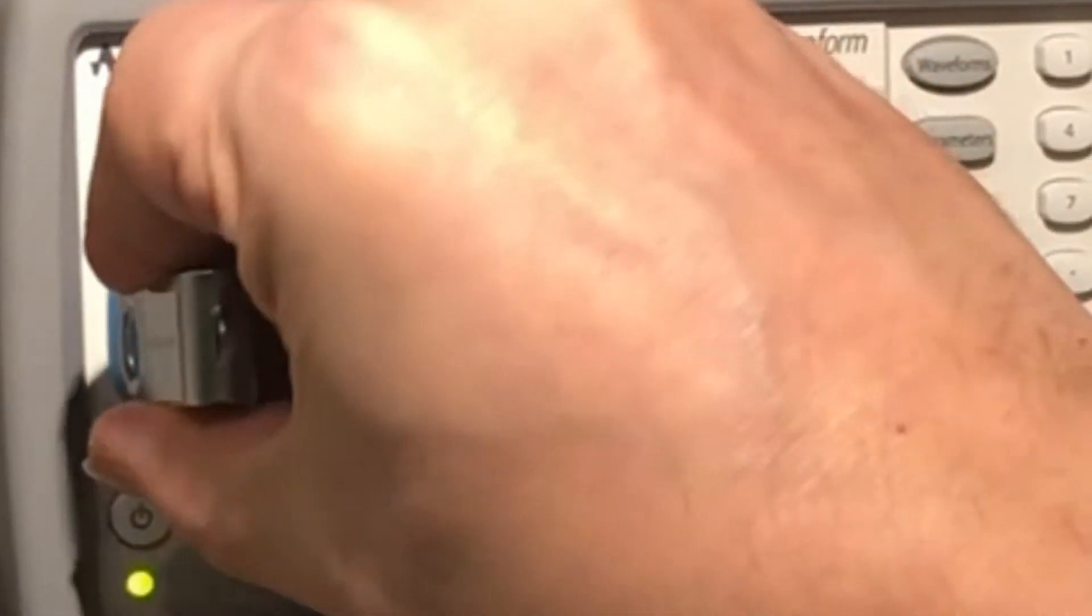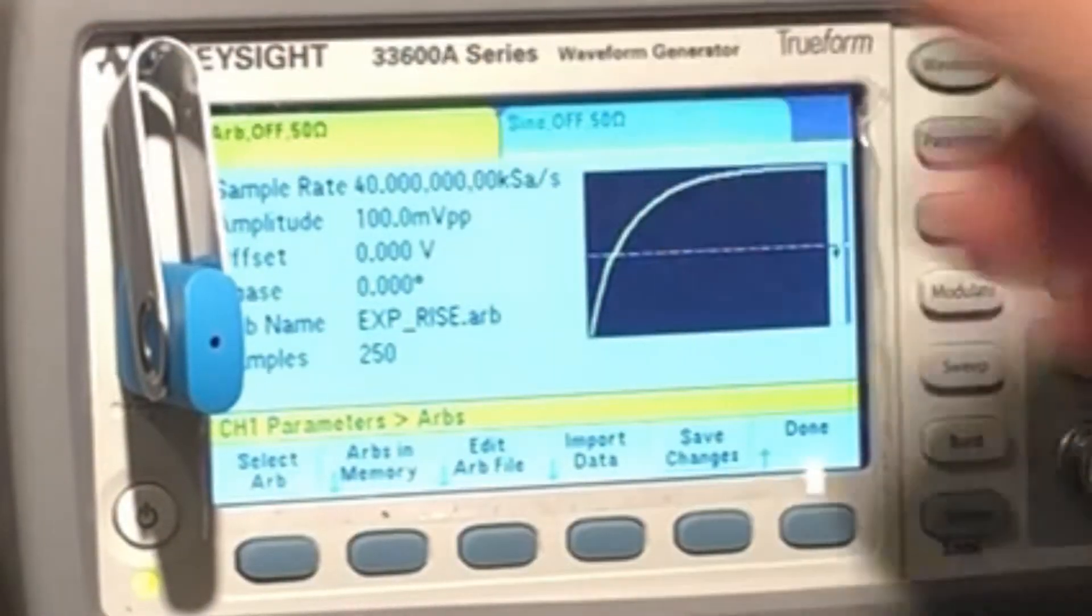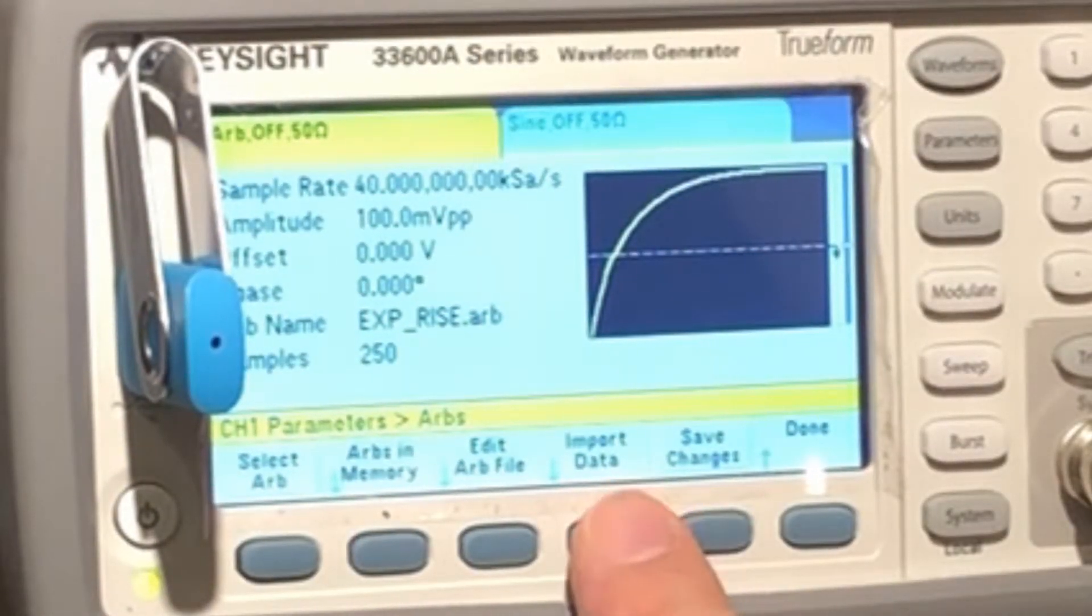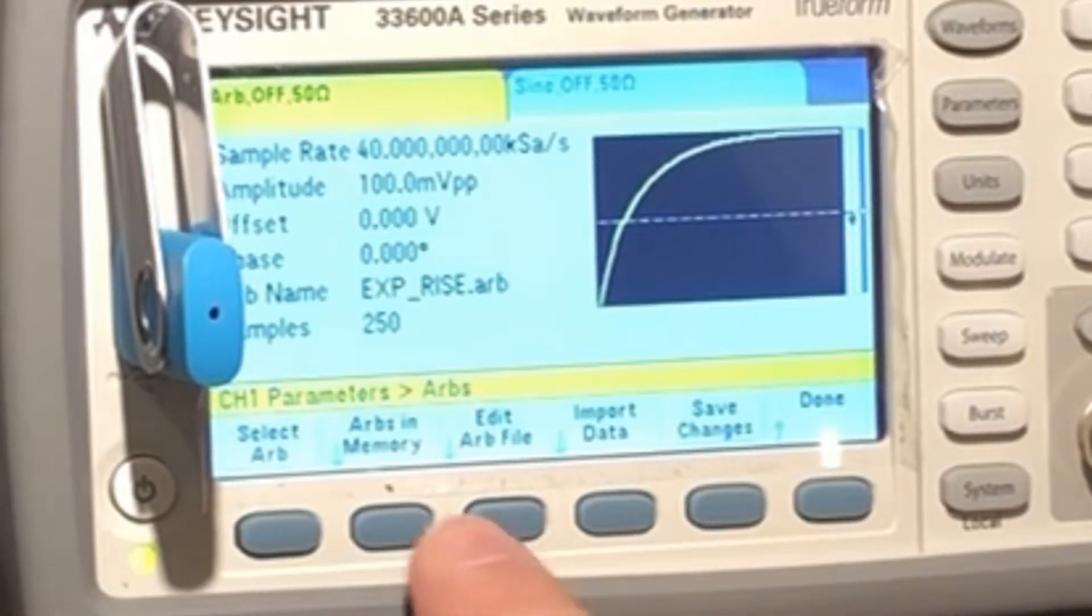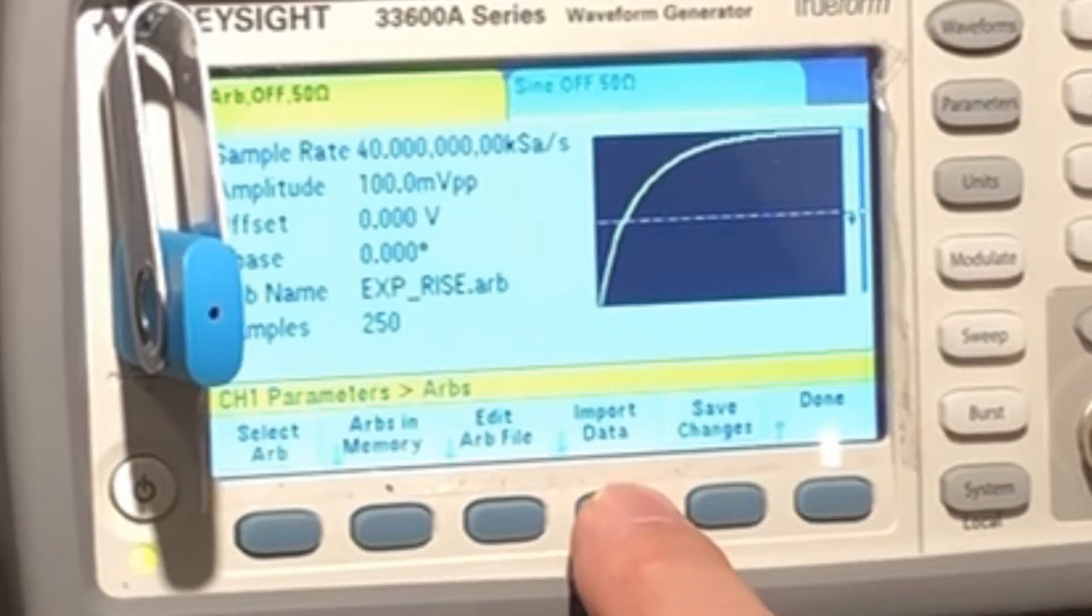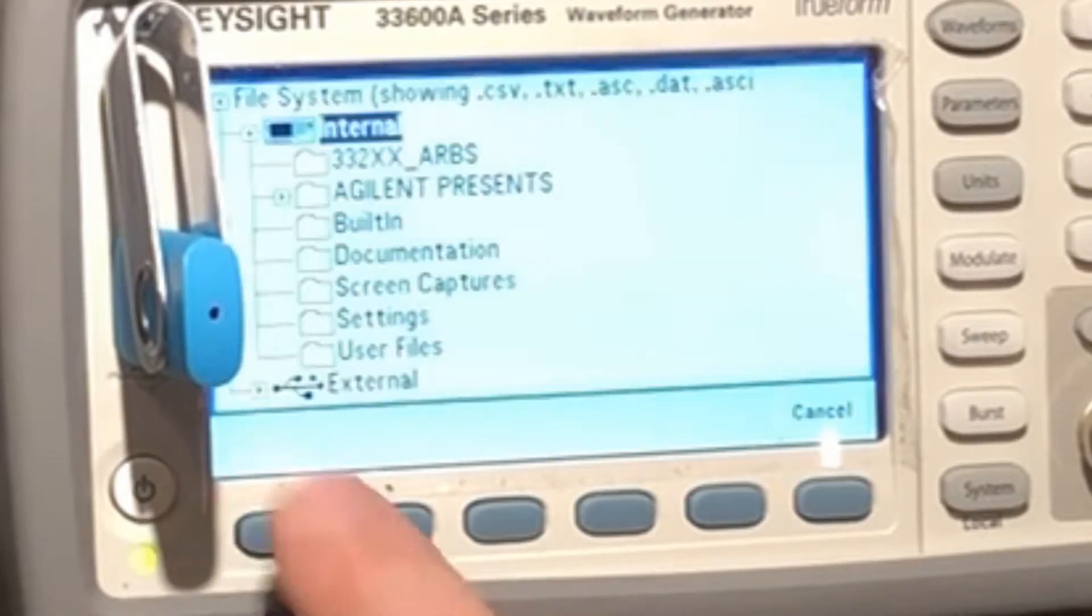Load that in. We're going to import data, so first of all ARBS and memory. Okay, so our memory catalog channel done. So ARBS and memory, we're going to import data, select data.